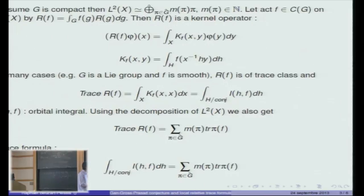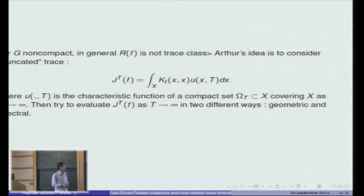Now I would be interested in groups G that in general are non-compact. In this case, in general R of F is not trace class, and so what we have done can't be done just the same way. Then Arthur's idea for his local trace formula was to consider some sort of truncated trace, J T of F. It would be just the integral of the kernel over the diagonal but this time against some characteristic function of a compact subset of X depending on the parameter T. Omega T is going to cover all of X as T is going to infinity. For some well-chosen characteristic function we can then try to evaluate this truncated trace as T goes to infinity, as before, in two different ways, one will be geometric and the other one will be spectral.